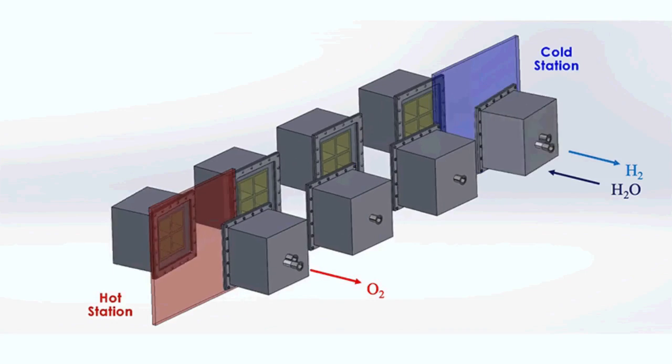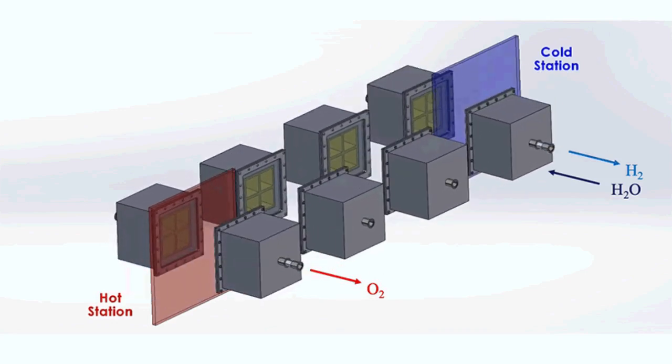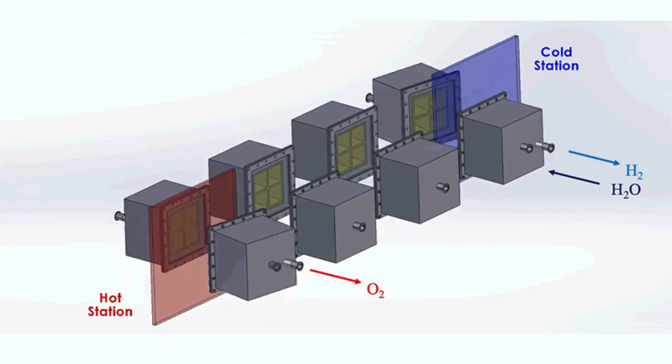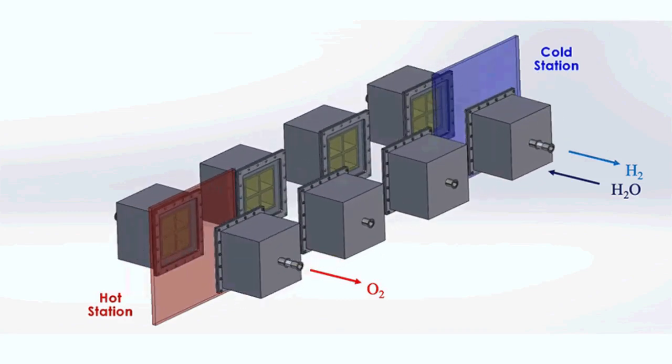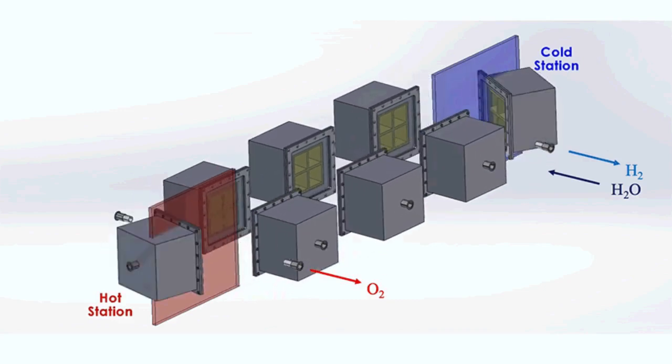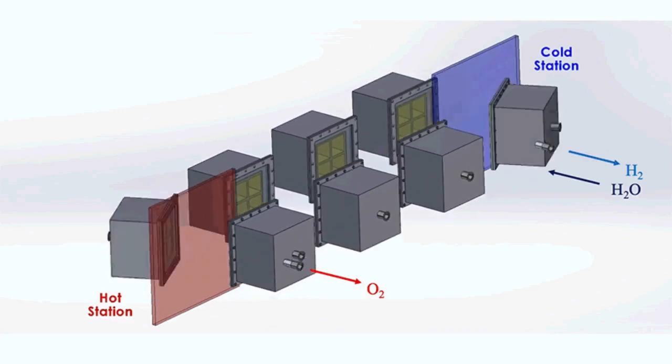Each reactor would first pass through a hot station, where it would be exposed to the sun's heat at temperatures of up to 1500 degrees Celsius. This extreme heat would effectively pull oxygen out of a reactor's metal.